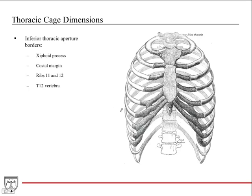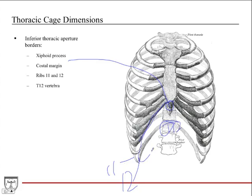The inferior thoracic aperture borders start with the xiphoid process, which is the inferior portion of the sternum. Then you have the costal margin, which is formed by the false ribs, followed by ribs 11 and 12, and then down to the T12 vertebra. Those are the borders of the inferior thoracic aperture.